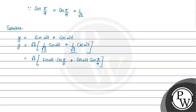Applying the identity sin(a+b) equals sin(a)cos(b) plus cos(a)sin(b), this simplifies to sin(ωt + π/4). Therefore, finally we can write y equal to √2 times sin(ωt + π/4).